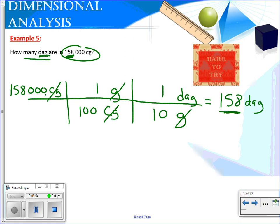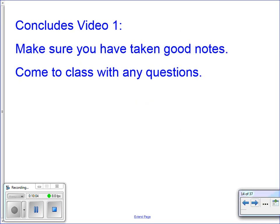So dimensional analysis, you can have multi-steps. You could have work a problem that goes all the way across the page. The key is just make sure you cross out your units. Now, if you knew the relationship between centigrams and decagrams, you could have done it in one step. This concludes video one. Make sure you've taken good notes. Come to class with any questions. And definitely review your metric prefixes if you've forgotten those. So you want to make sure that you are able to use those off the top of your head. And see you in class tomorrow.